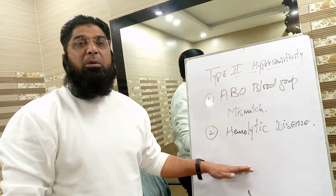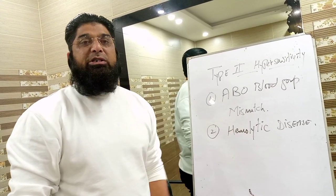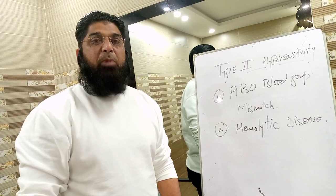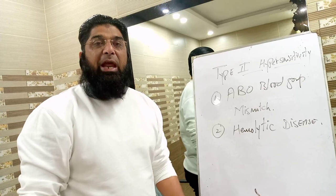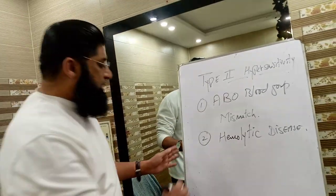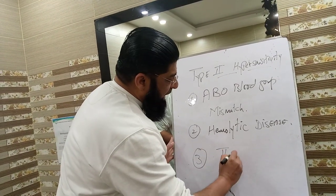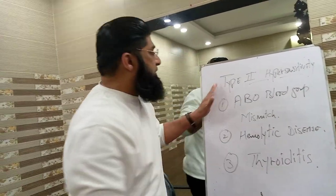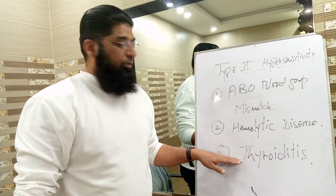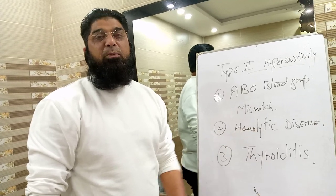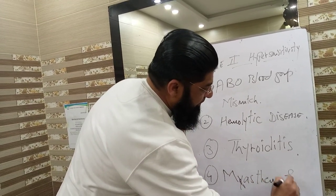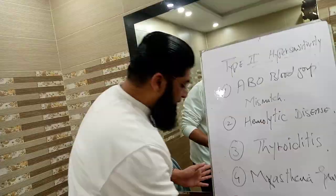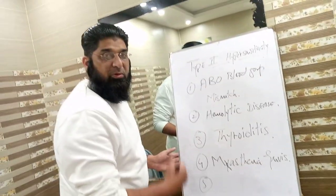Number two, hemolytic disease — it may be RH incompatibility. In newborn cases, the severe form of which is called erythroblastosis fetalis, in which the mother is RH negative and the baby is RH positive. Number three, thyroiditis. Type 2 hypersensitivity is also included in different types of autoimmune diseases like thyroiditis, myasthenia gravis, and very commonly Goodpasture syndrome in glomerulonephritis.